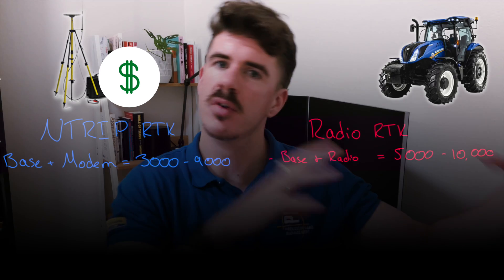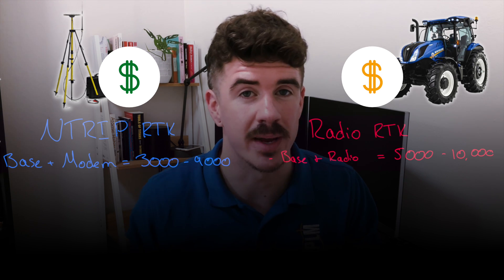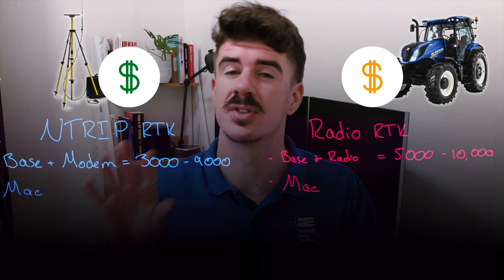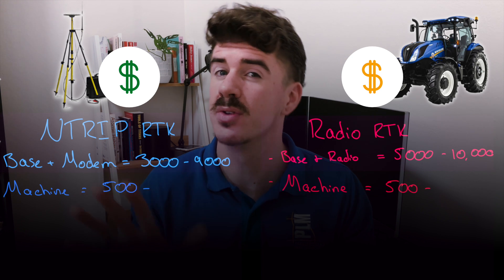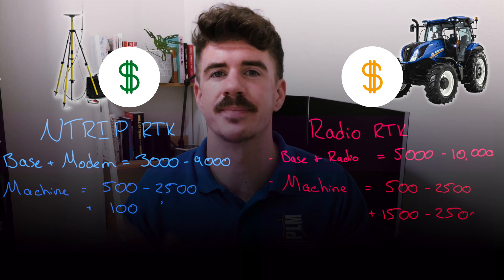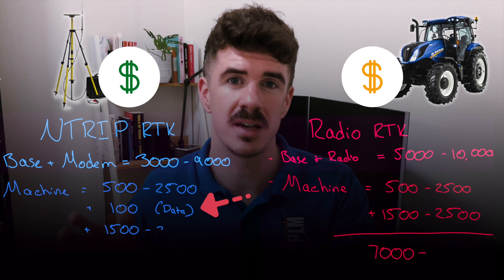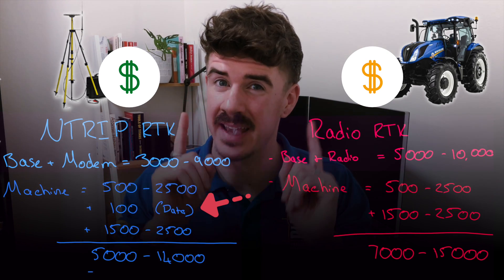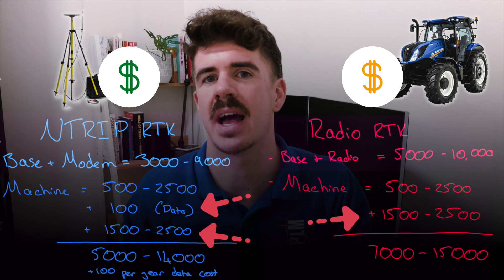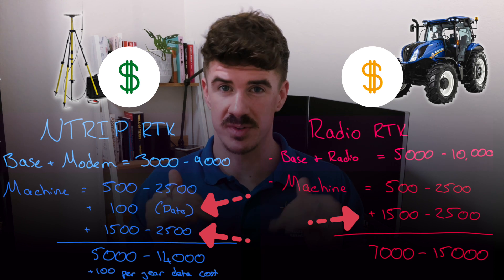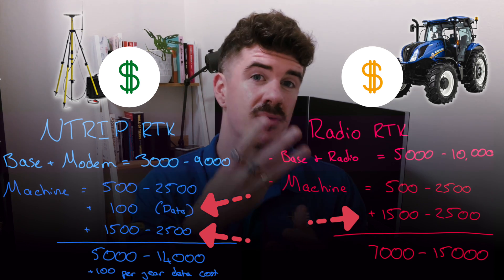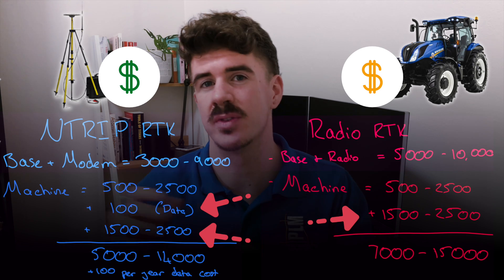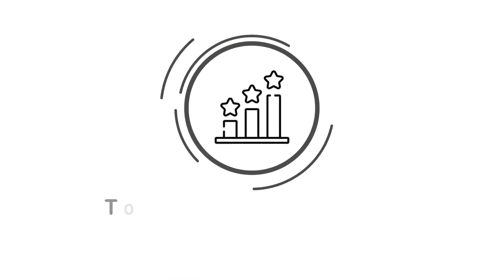On the machine/rover side, for each machine you'll need: number one, a radio or modem to receive the correction signal — radios are more expensive, so expect $500 to $2,500 USD. For modems, add around $100 per year for the data subscription and SIM card. You'll also need that high accuracy unlock for the GNSS receiver already on board. Within precision agriculture, receivers typically have three levels — base, medium, and high — and you can expect to pay $1,500 to $2,500 to unlock between each step.